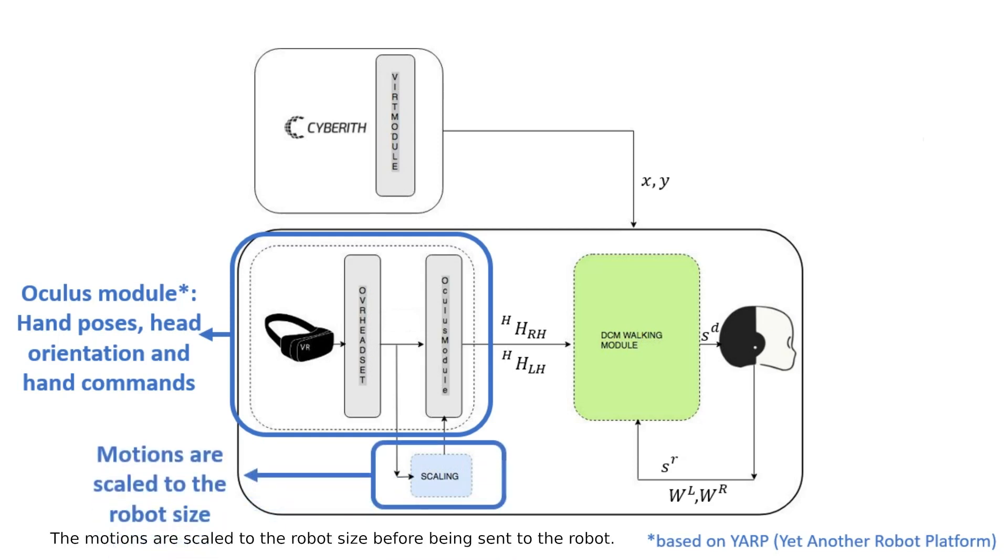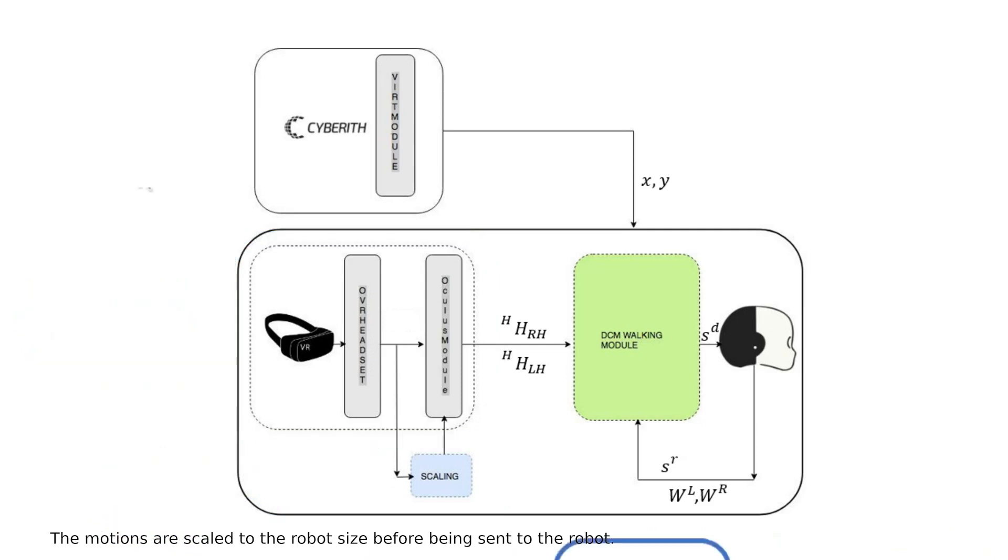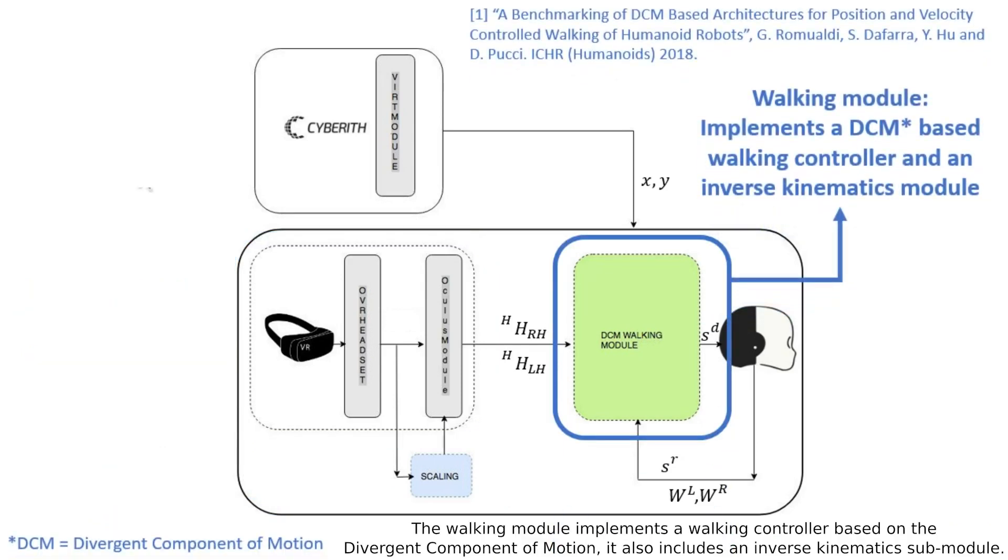The motions are scaled to the robot's size before being sent to the robot. The walking module implements a walking controller based on the divergent component of motion. It also includes an inverse kinematics sub-module.